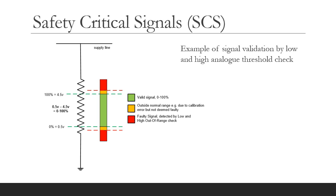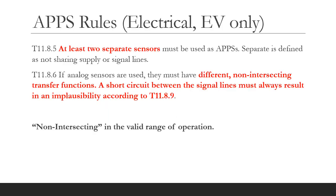A word of caution: if you allow your signals to be extrapolated outside of the 0 to 100 percent range — let's say minus two percent when the pedal is not depressed — please make sure that your software can cope with these out-of-range values, in this case slightly negative. The previous slides were about signal validation in the general sense to help implement SCS systems. But as I mentioned at the start, the example APPS was non-compliant because it had two identical transfer functions, which is not allowed.